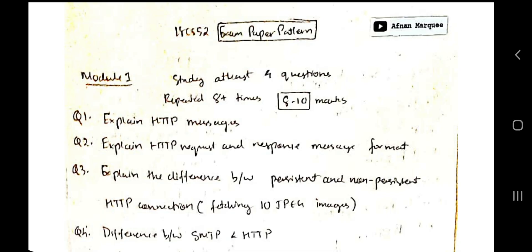There are a few questions which are repeated more than eight times in previous papers, and from one module there are three or four questions you can't miss. I'll be going through that — this is just a brief overview. The detailed answers link will be provided in the description box, as well as the official notes. I'll be telling you what you need to write, and if you want explanation on how to write and remember the answers, the detailed answers video link is also there.